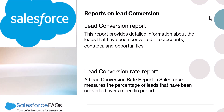The second report will be the lead conversion rate report. There is a slight difference between the two: the lead conversion report shows which leads have been converted, whereas the lead conversion rate report measures the percentage of leads that have been converted over a specific period of time. This report tracks the efficiency of the sales team in converting leads into customers or opportunities, and its purpose is assessing the effectiveness of lead management strategies, identifying areas of improvement, and setting performance benchmarks for the sales team.